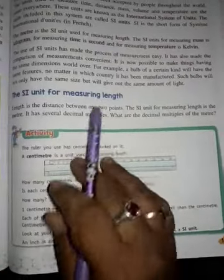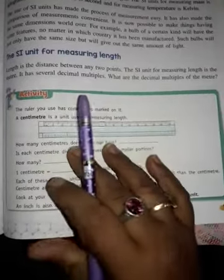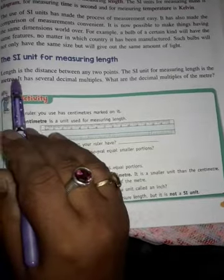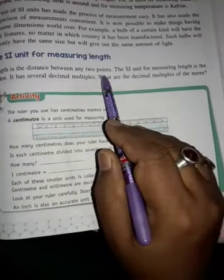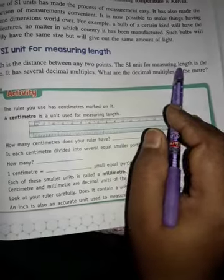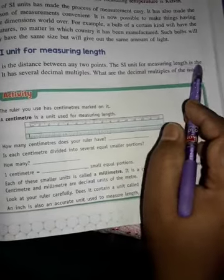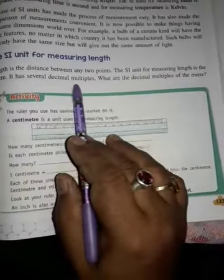The SI unit for measuring length: Length is the distance between two points. The SI unit for measuring length is the meter. It has several decimal multiples.